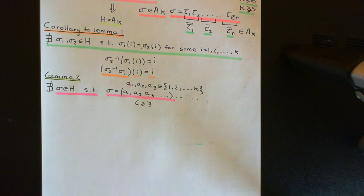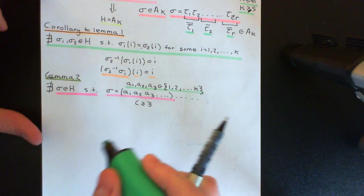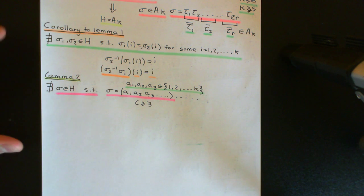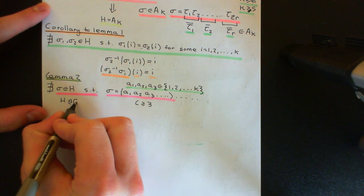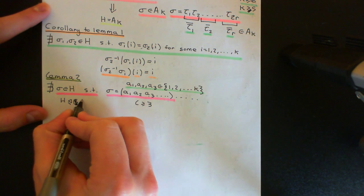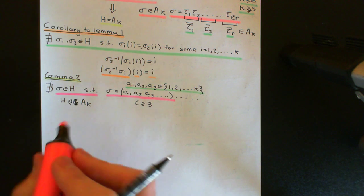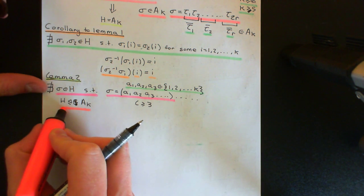So that's an overview of the strategy. How are we going to prove Lemma 2? Why can't you have a permutation inside this normal subgroup that has a cycle of length 3 or greater? The reason is that we're assuming H is a normal subgroup. So if I conjugate it by any element of A_k, I must get something else that's in H.